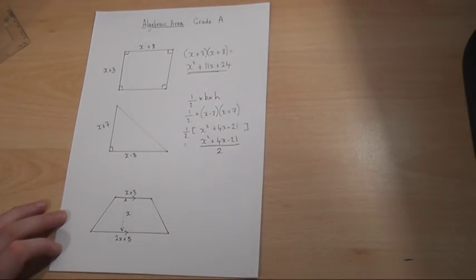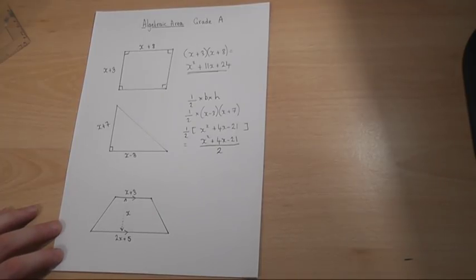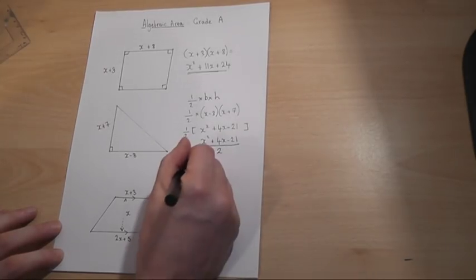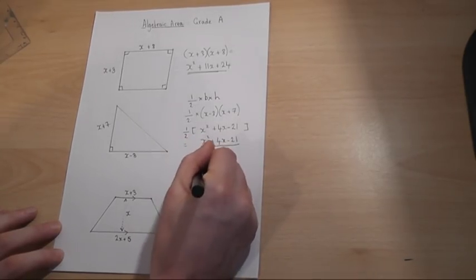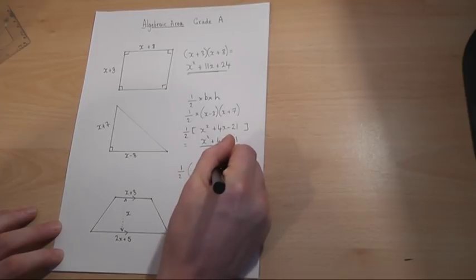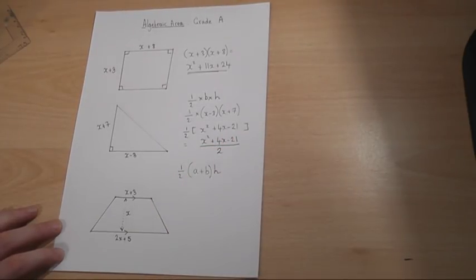The third shape is a trapezium. Now a trapezium, they actually give you the formula for the area in the exam paper, but as a reminder, this is how the formula looks.